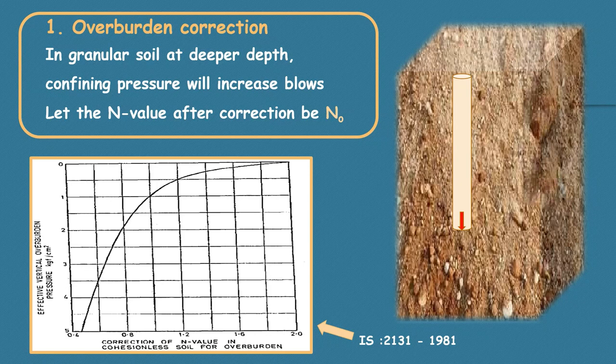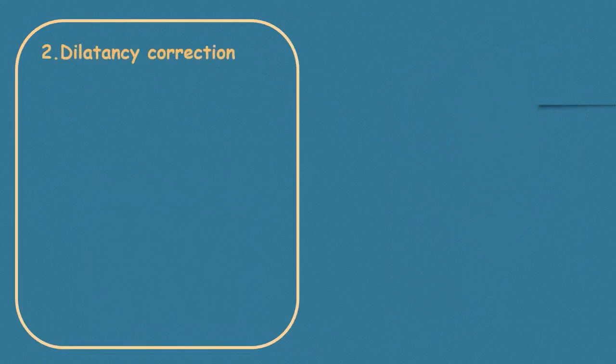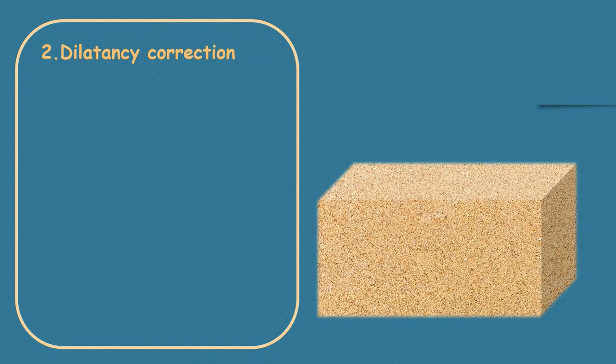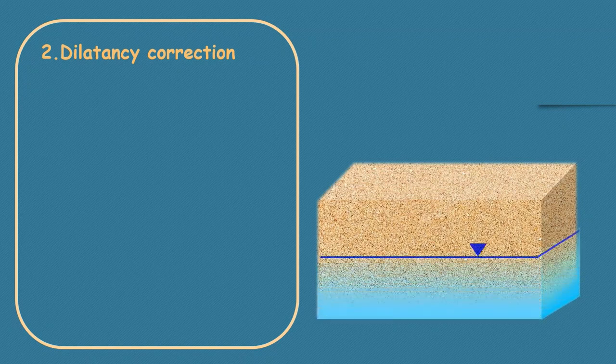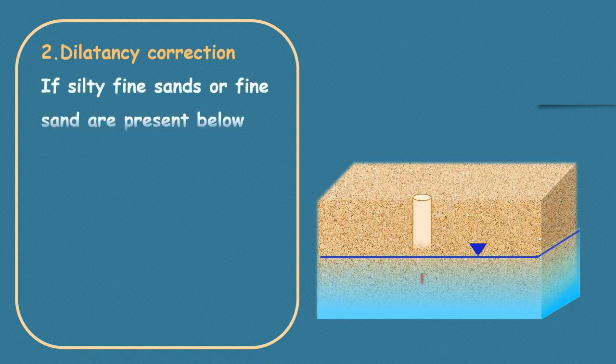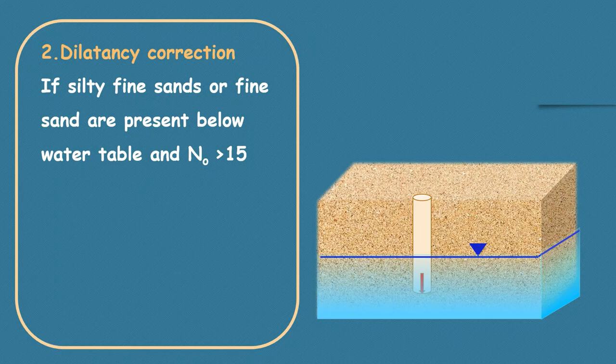The next correction to be applied is dilatancy correction. If silty fine sands or fine sands are present below the water table and N value after applying overburden correction is greater than 15, then the corrected N value is given as: